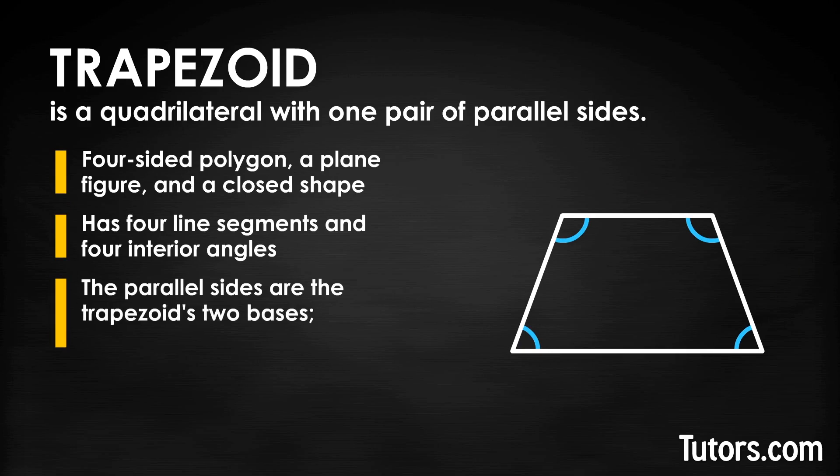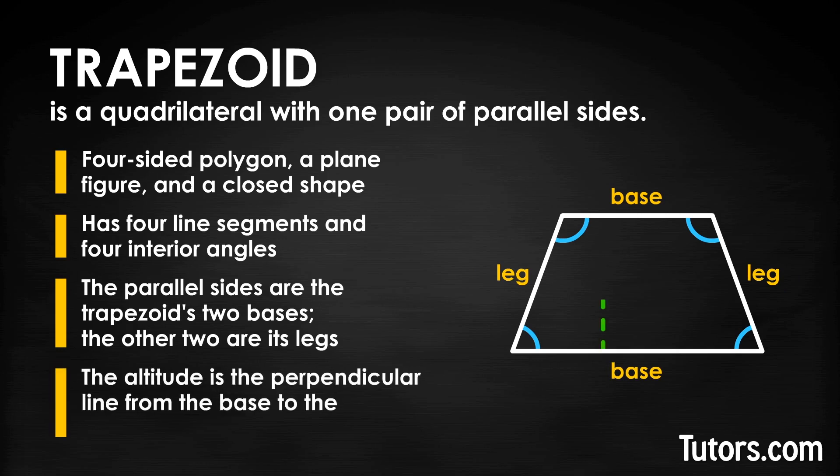The parallel sides are the trapezoid's two bases. The other two sides are its legs. Usually the trapezoid is presented with the longer parallel side, the base, horizontal. A perpendicular line from the base to the other parallel side will give you the trapezoid's height or altitude.